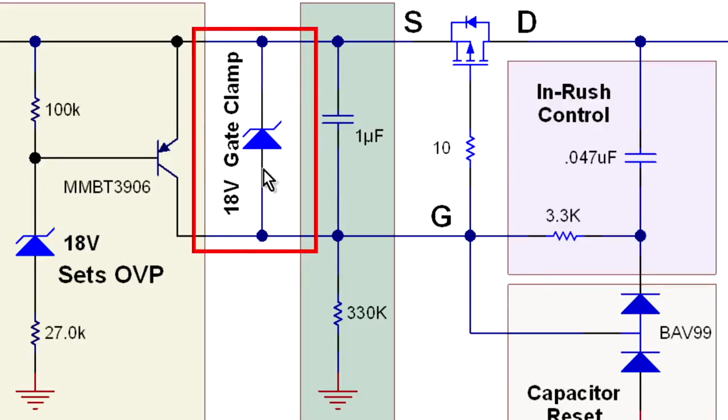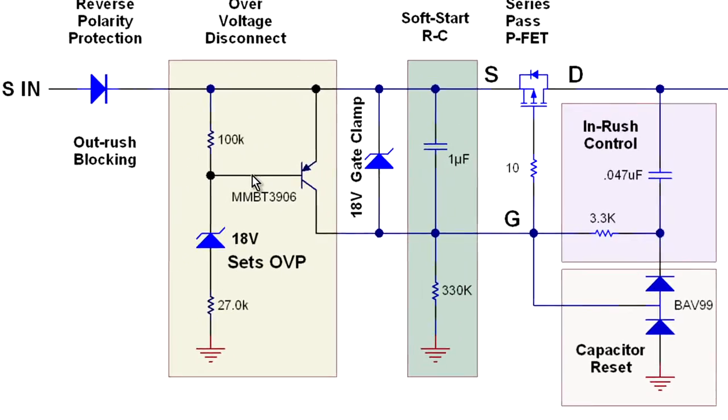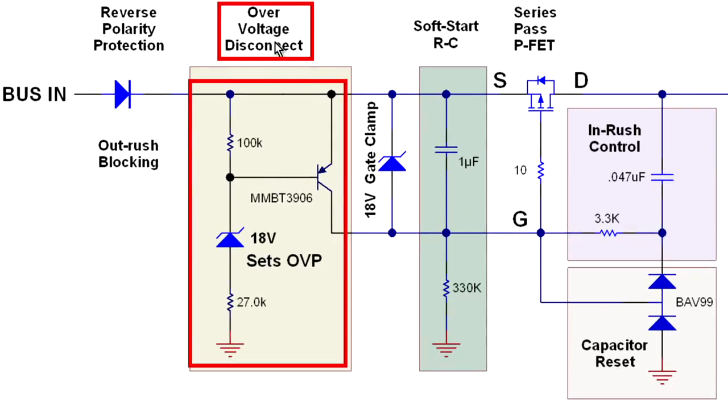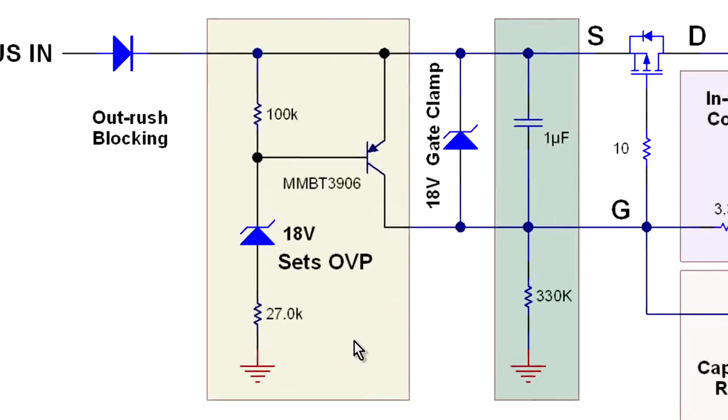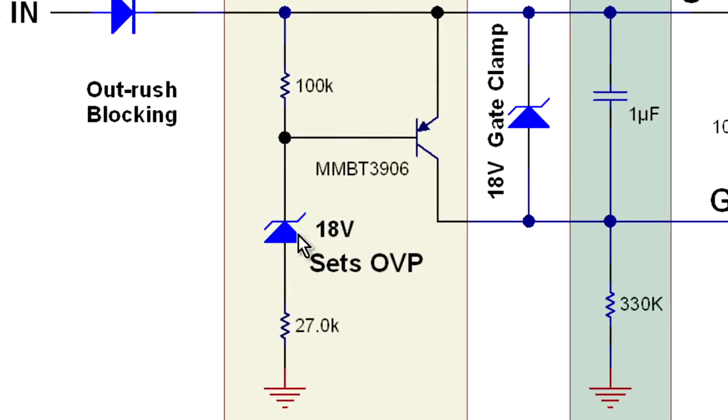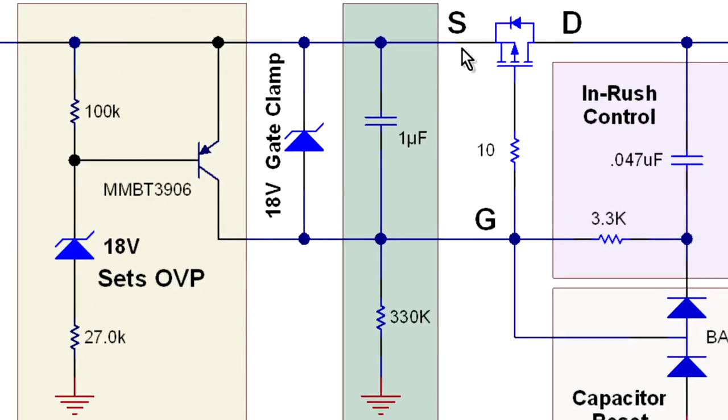There's an 18-volt gate clamp across the gate to source in normal operation that is never conducting, and there's also an over-voltage disconnect circuit on the very left-hand side. The way this works is when you get above the breakdown voltage of the Zener diode, you pull base current through this PNP transistor, and that shorts the gate drive into the MOSFET, disconnecting the load.